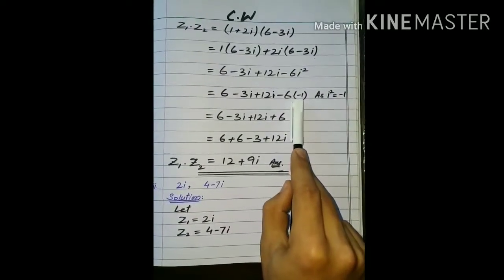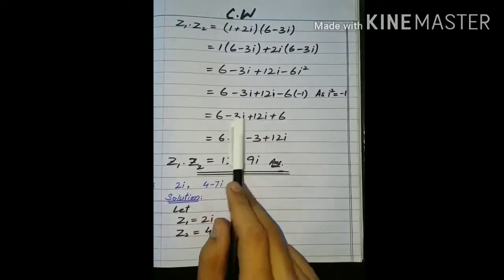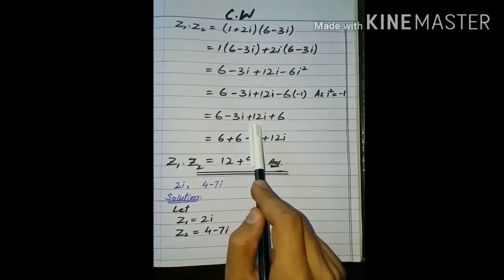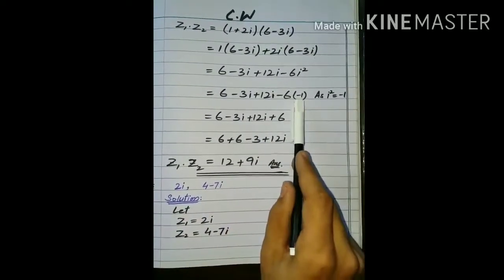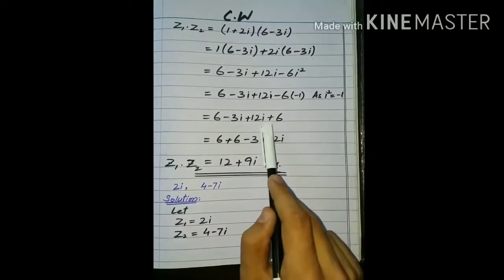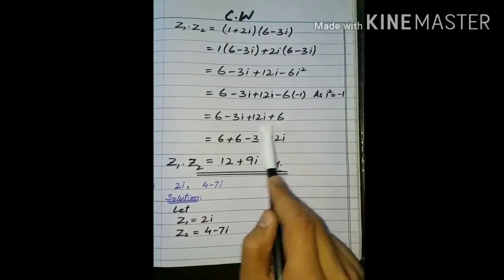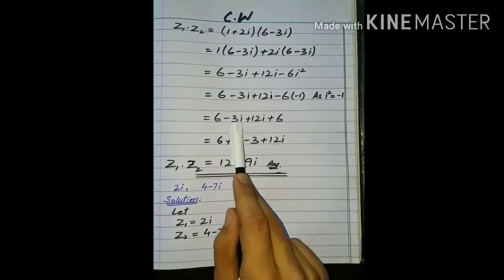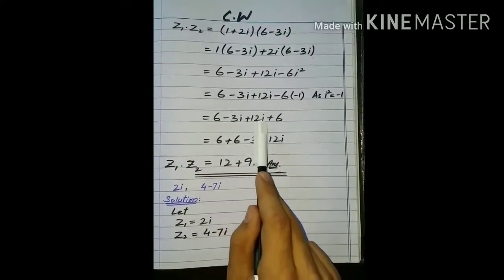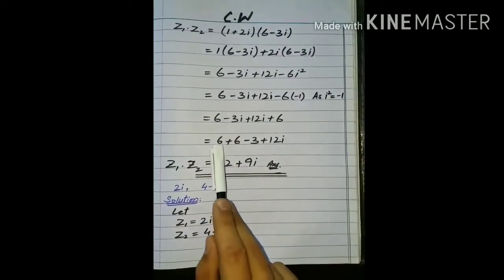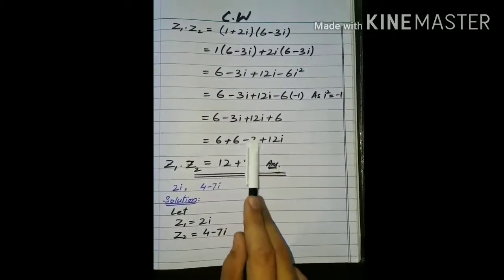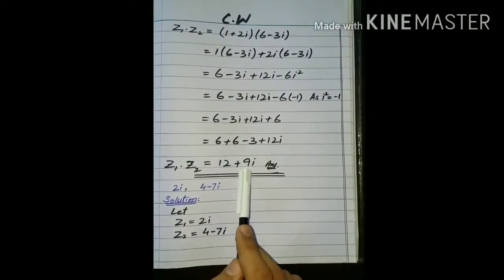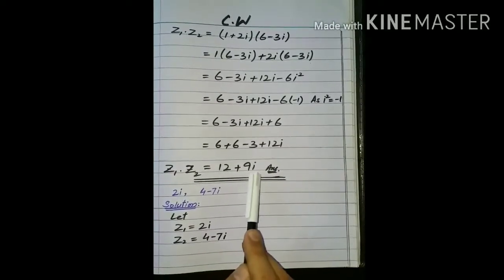اب ہم نے iota square کی جگہ پر minus 1 لکھا ہے۔ پھر یہ multiply ہو رہا ہے تو minus minus plus اور six one is six آجائے گا۔ arrangement کرنی ہے — real part real کے ساتھ اور imaginary part imaginary کے ساتھ۔ add کریں گے تو 12 آجائے گا، پھر 12 سے 3 minus کریں گے تو 9 آجائے گا، sign of greater term plus آجائے گا، اور iota اپنی جگہ پر آجائے گا۔